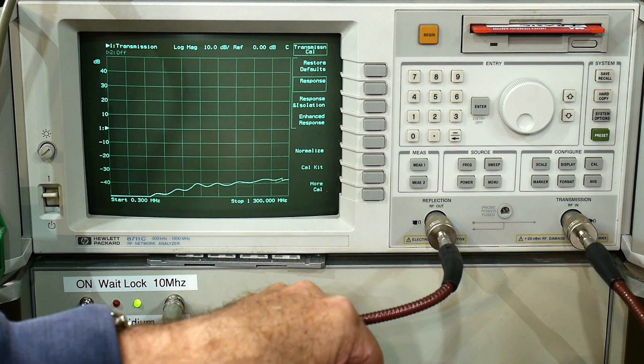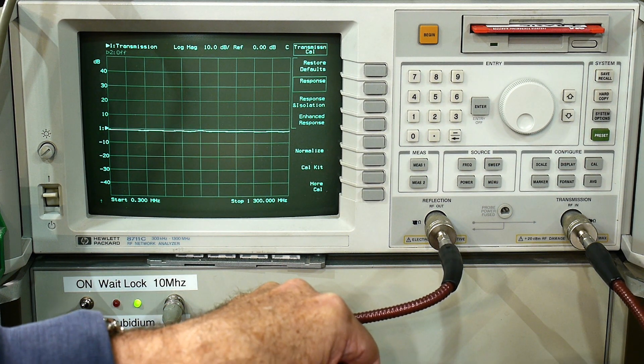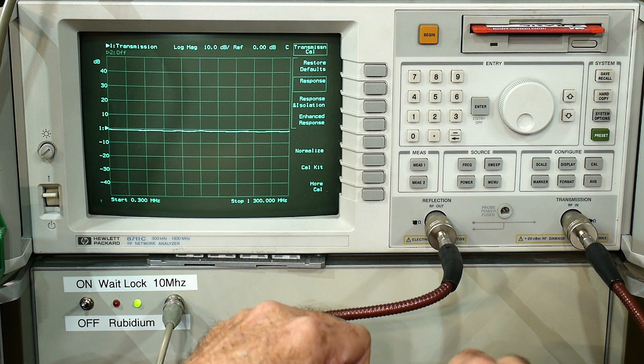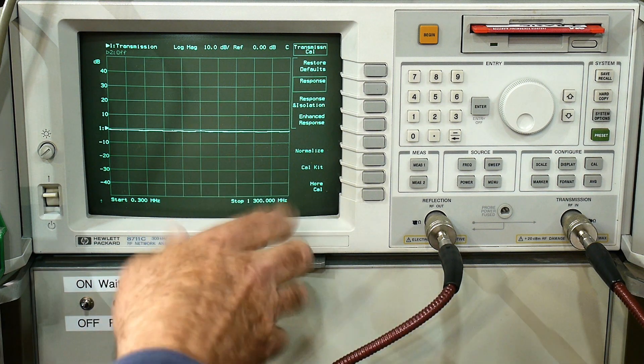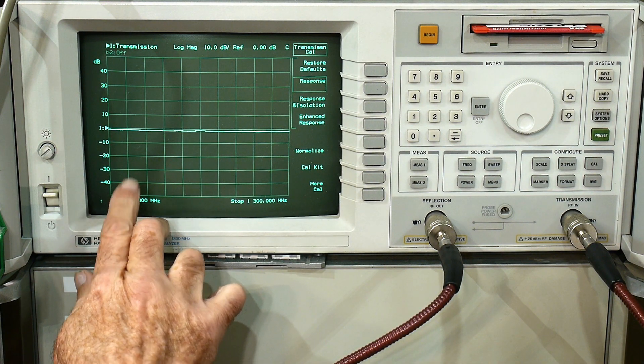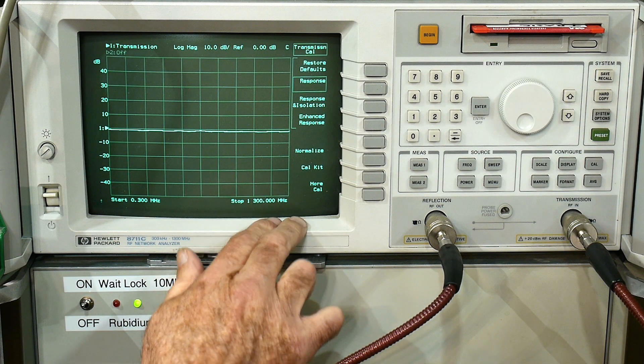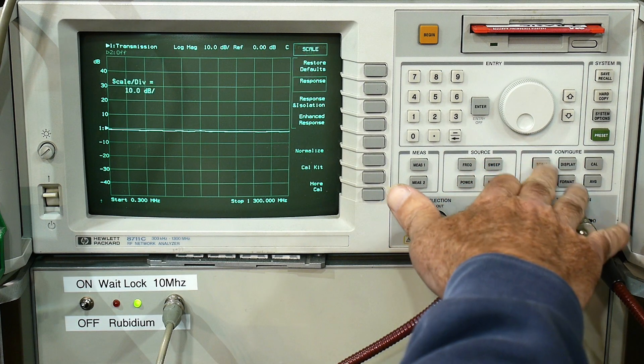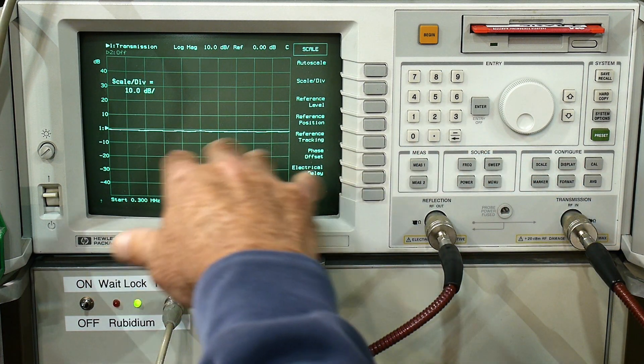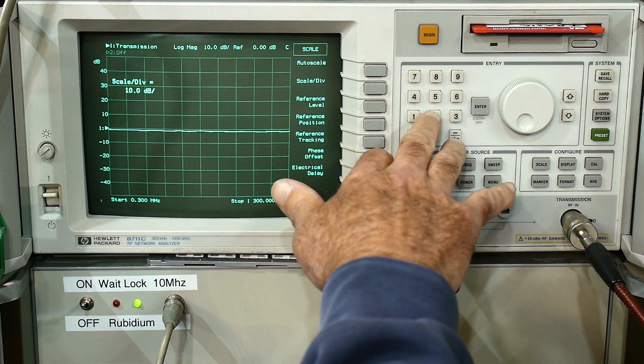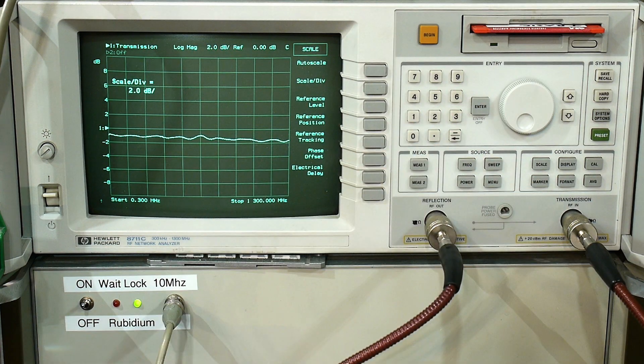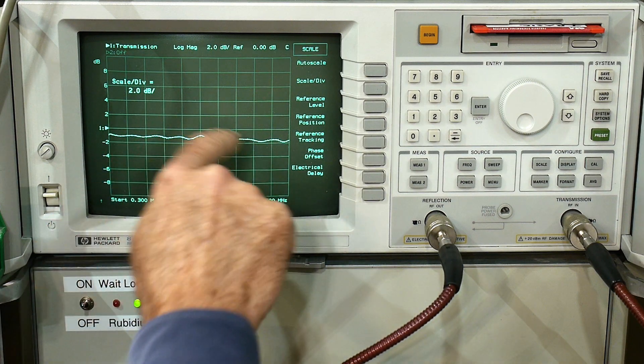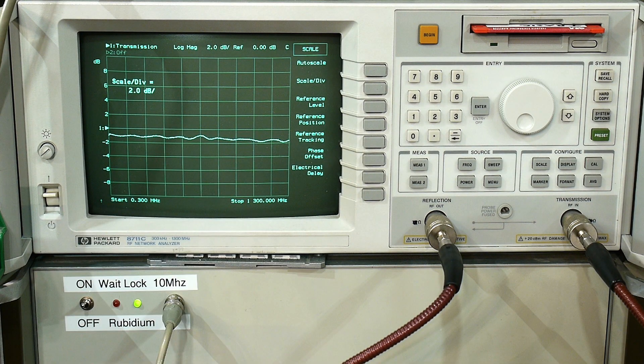So let's go ahead and put this attenuator in. Right now it's set to 0 dB. You can see that there is some insertion loss for this thing. We're sweeping from 0.3 megahertz to 1.3 gigahertz. We do have some loss here. Let's change the scale to two per division. Yeah, we're getting about 1 dB to 2 dB insertion loss and a bit of ripple on it.